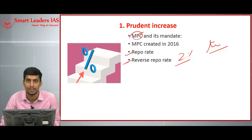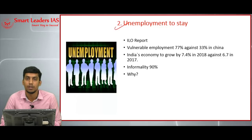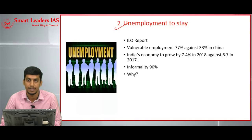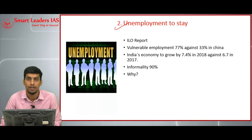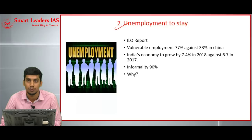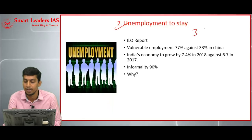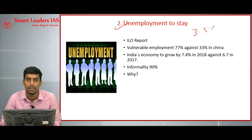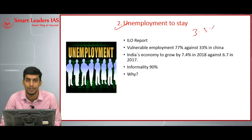Today's second topic is unemployment. Recently, the International Labour Organization released the World Employment and Social Outlook report for 2018. It says that India's unemployment rate would be staying at 3.5%, whereas China's unemployment rate is going to increase from 4.6% to 4.7%.